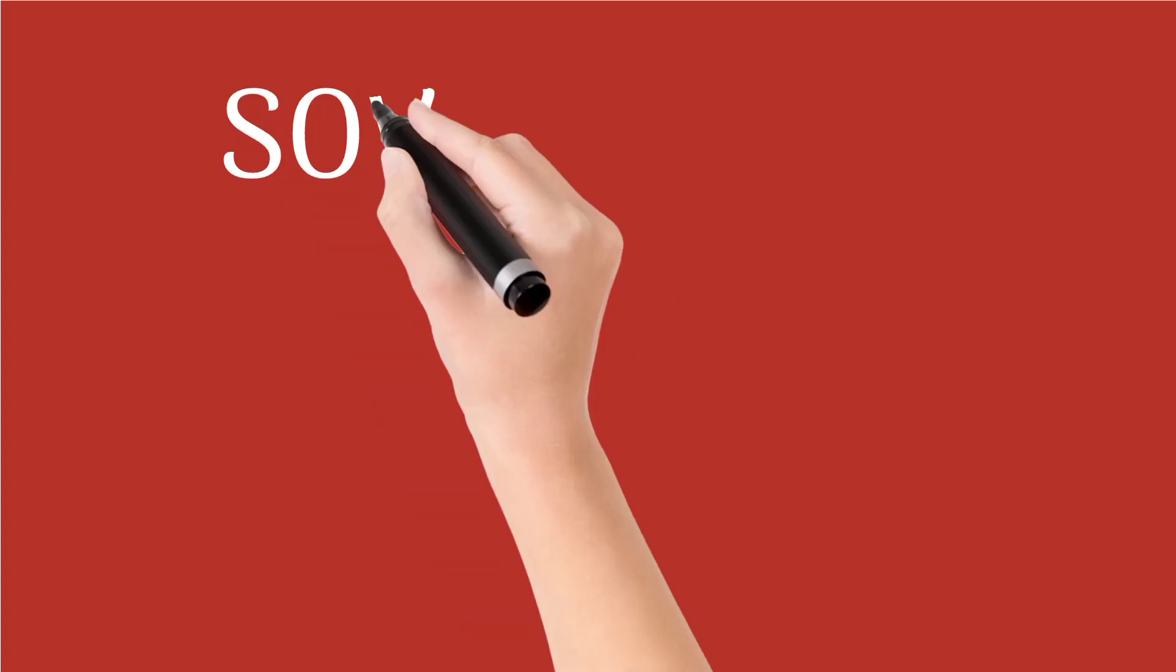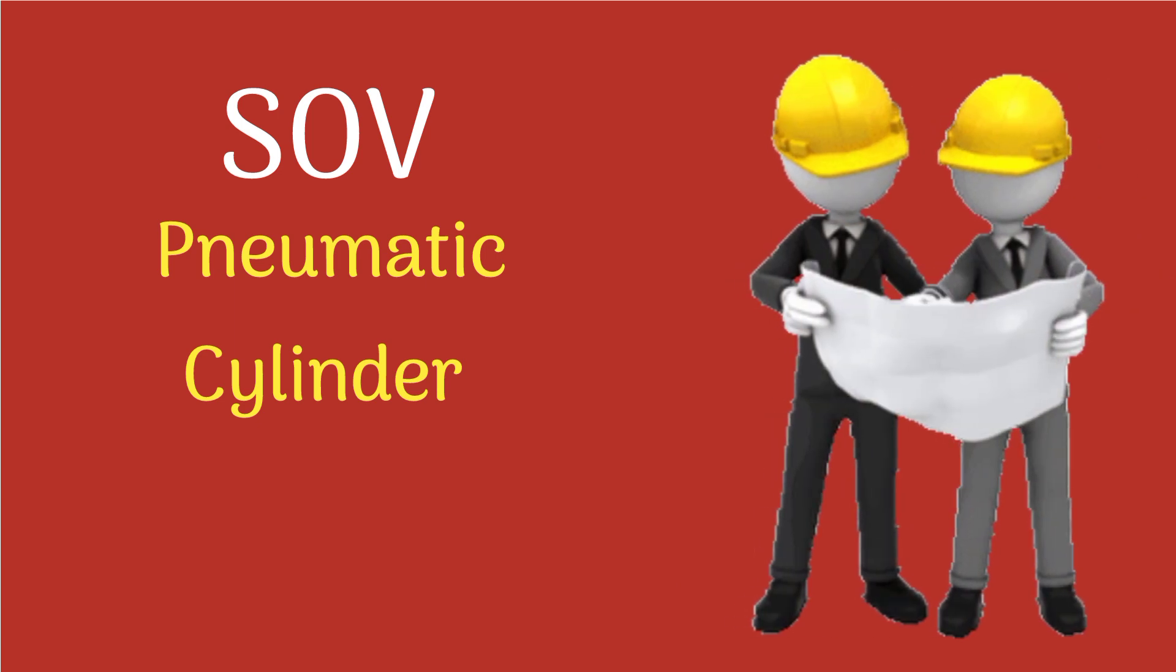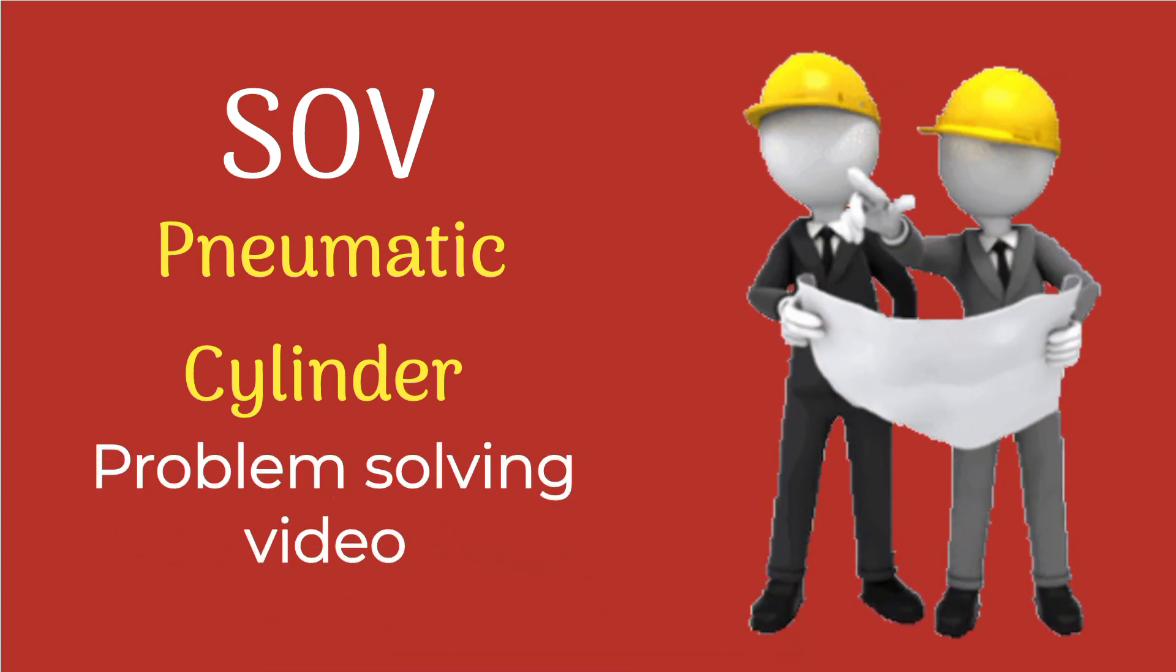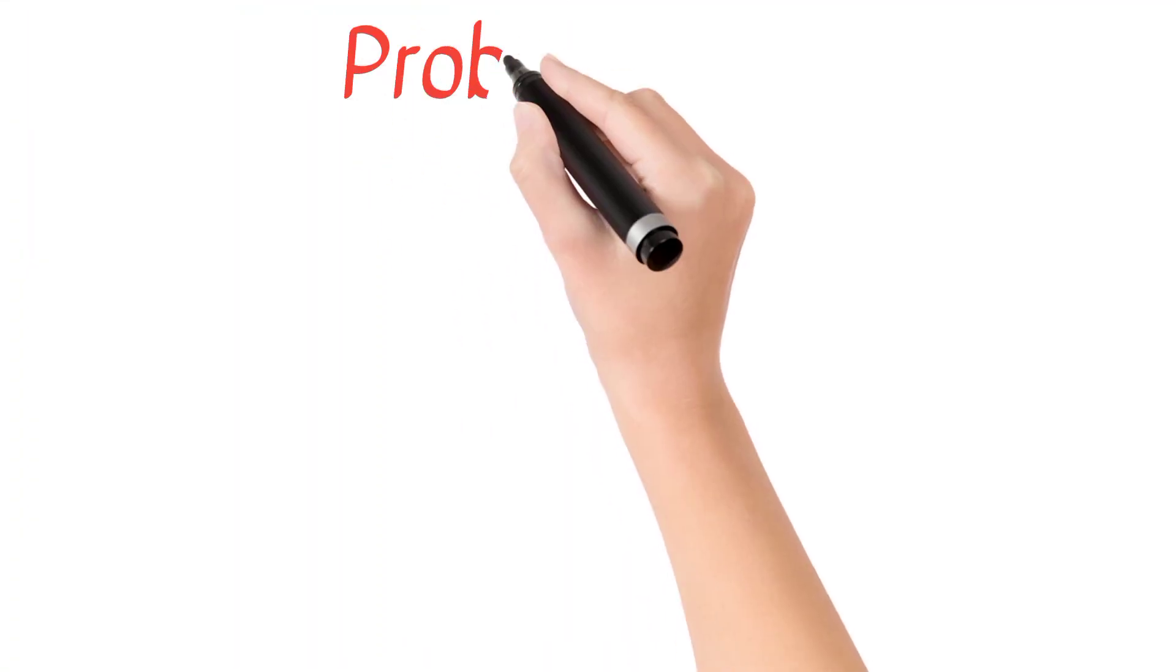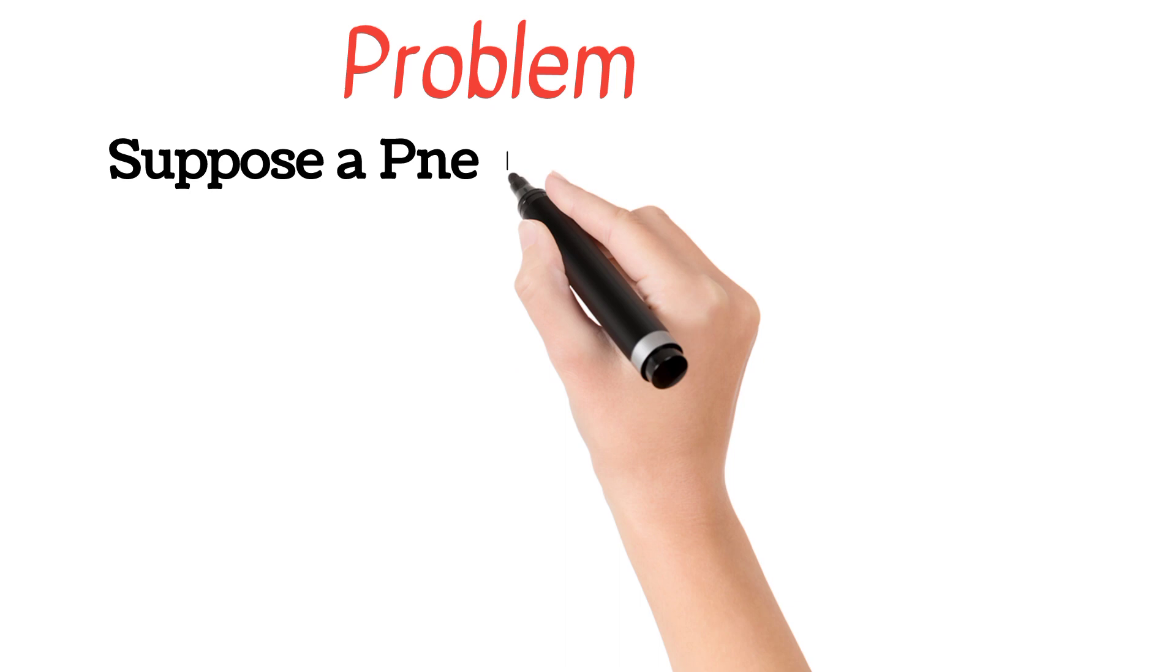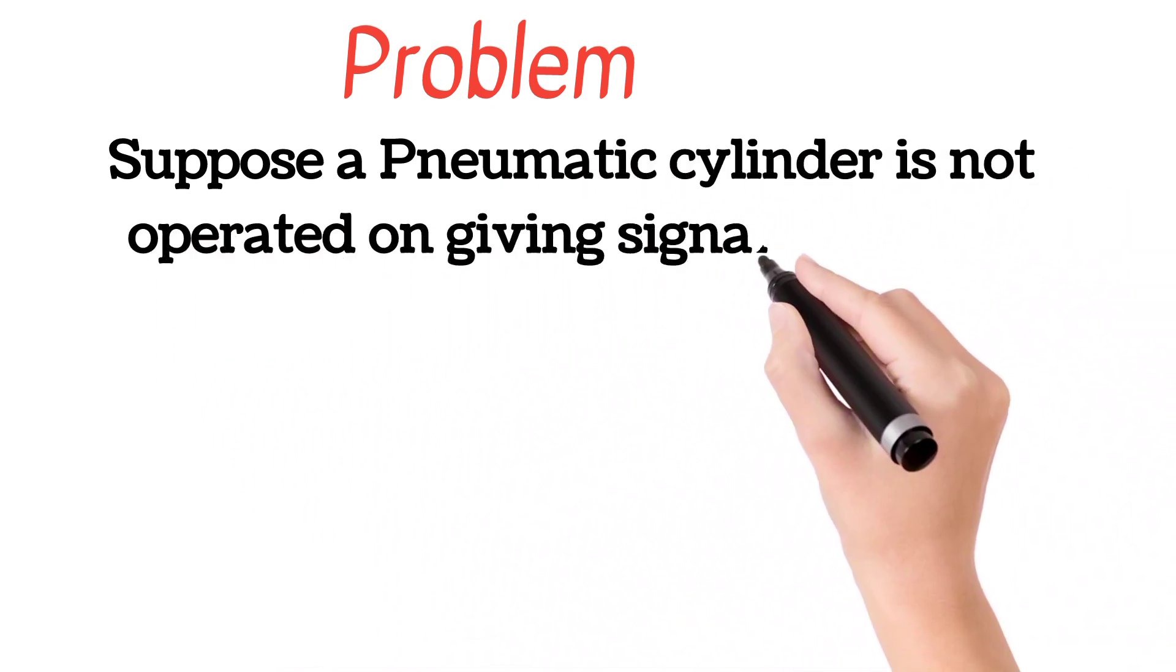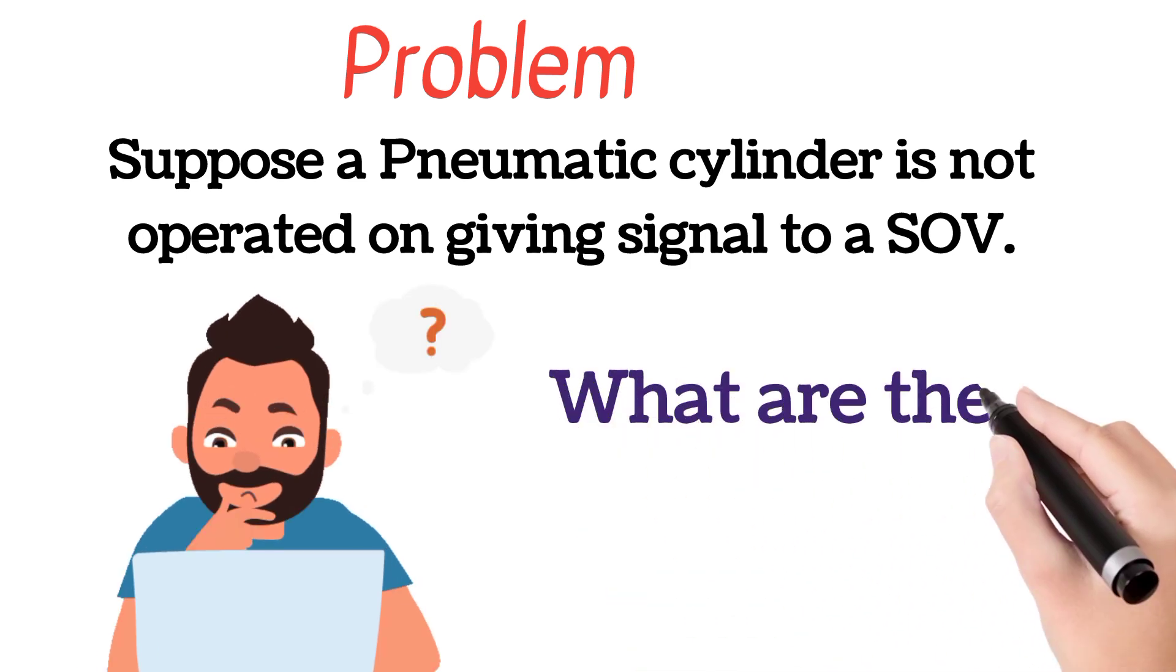Today's video is a problem-solving video. We will discuss solenoid valve and pneumatic cylinder problems in this video. Suppose a pneumatic cylinder is not operated on giving signal from solenoid valve or SOV. Then what are the possible reasons? Let's search for that.